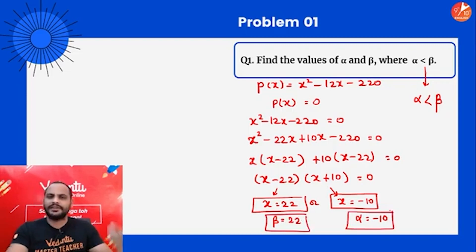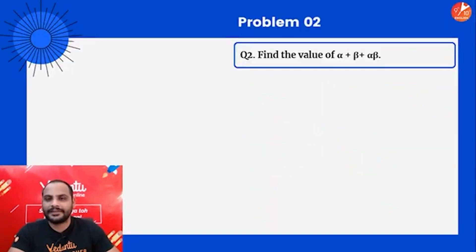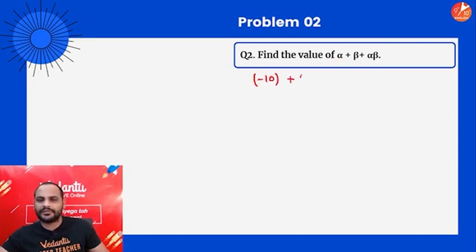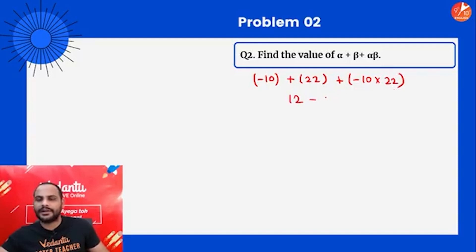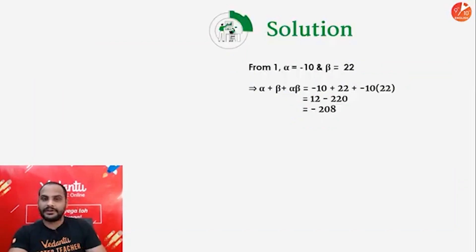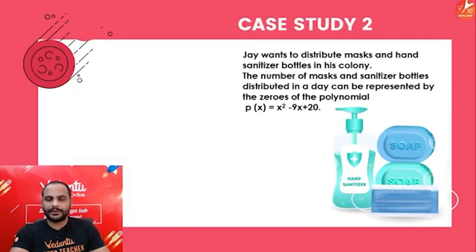Next question: find the value of alpha + beta + alpha·beta. We have alpha = -10 and beta = 22. So: (-10) + 22 + (-10)(22) = 12 + (-220) = -208. So the answer is -208. Simple, direct question.